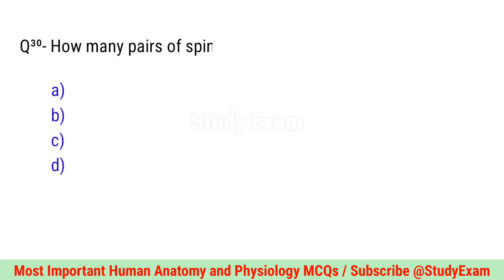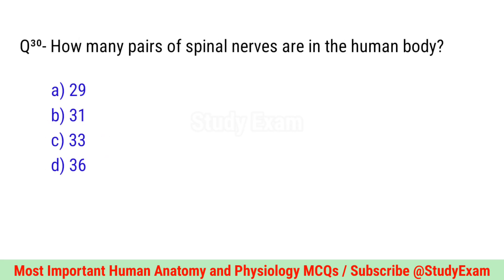Question number thirty. How many pairs of spinal nerves are in the human body? Correct option is B. 31.